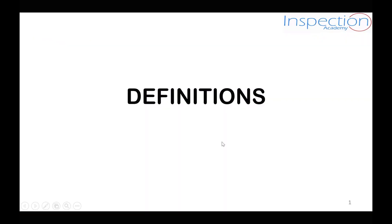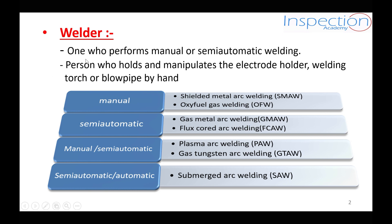Hello and welcome everyone. Today we will explain some definitions at the beginning of our course. First of all, what is the meaning of a welder? According to the ASME code, the welder is the one who performs manual or semi-automatic welding. According to the ISO code, the welder is the person who holds and manipulates the electrode holder, the welding torch, or the blow pipe by hand.